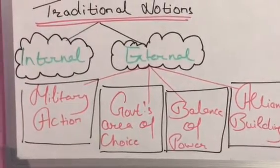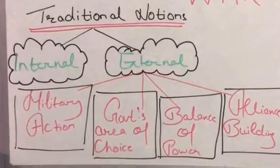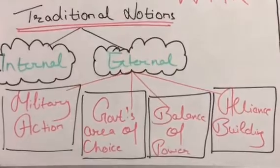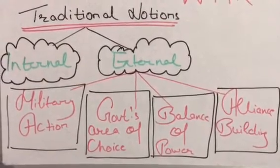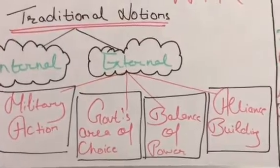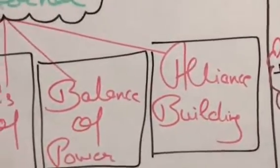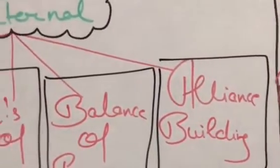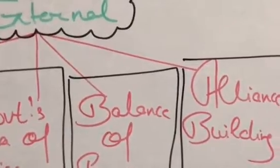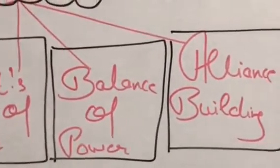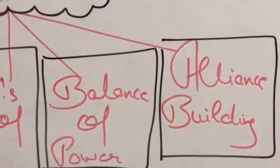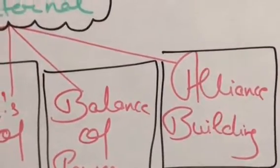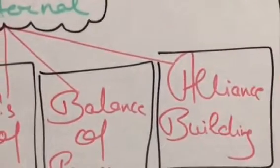Balance of power helps to avoid threats and the kinds of war which happen within countries and across countries. The next main element is alliance building. This means a small country or a large country makes alliances to prevent war, to limit war, to end war, and to keep its security policy intact.